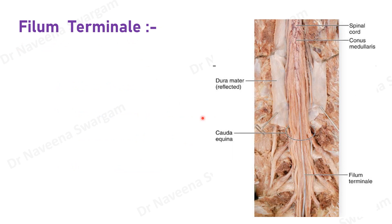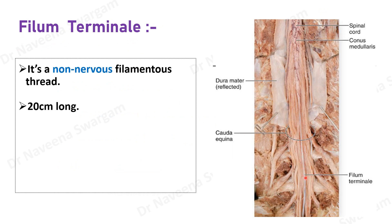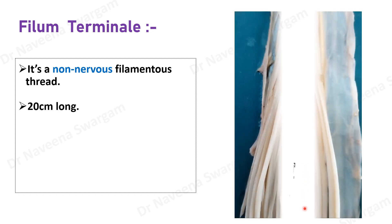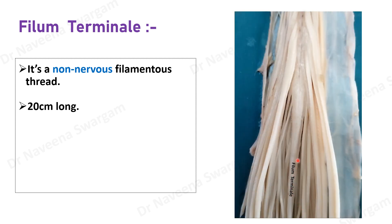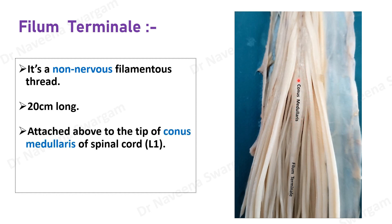Filum terminale. It is a 20 cm long non-nervous filamentous thread. The filum terminale begins from the tip of the terminal part of the spinal cord, known as the conus medullaris, which lies at the lower border of the L1 vertebra.